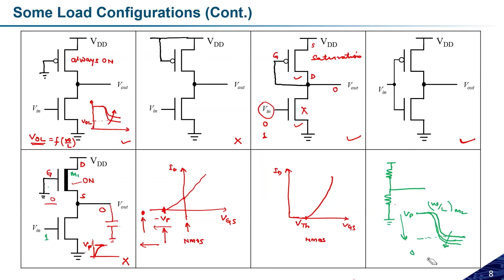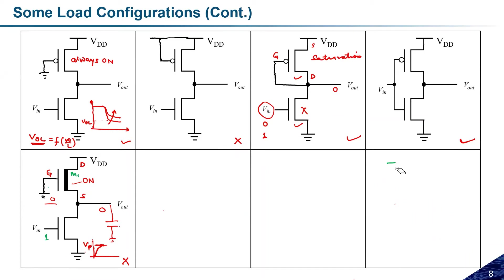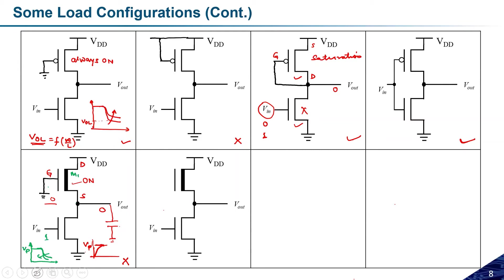The maximum output voltage is Vp and the characteristics will look something like this — the maximum is Vp and it depends on transistor sizing. Now, the next possible combination: suppose I connect the gate of this depletion transistor to VDD. Can anyone comment how this circuit will behave?